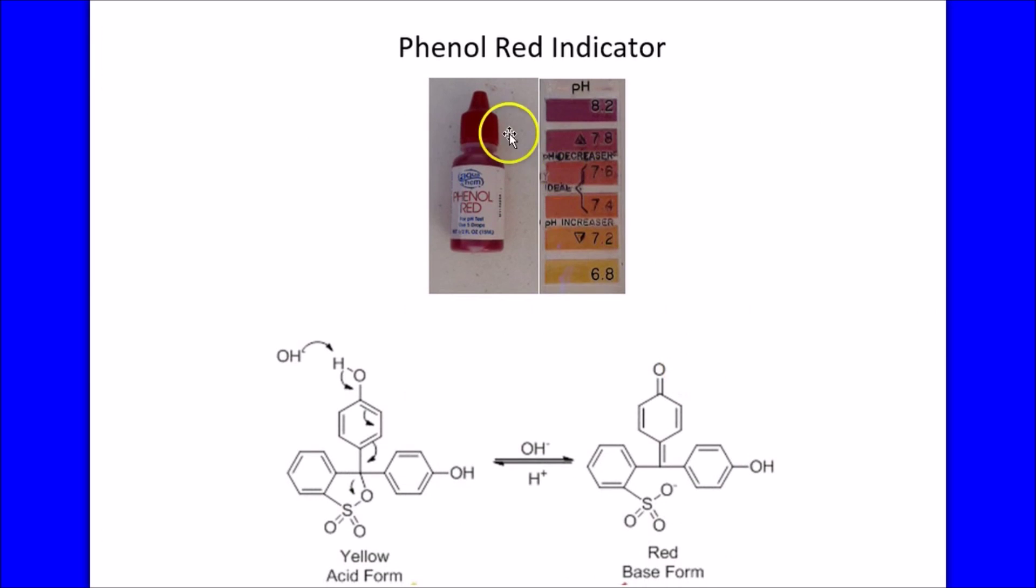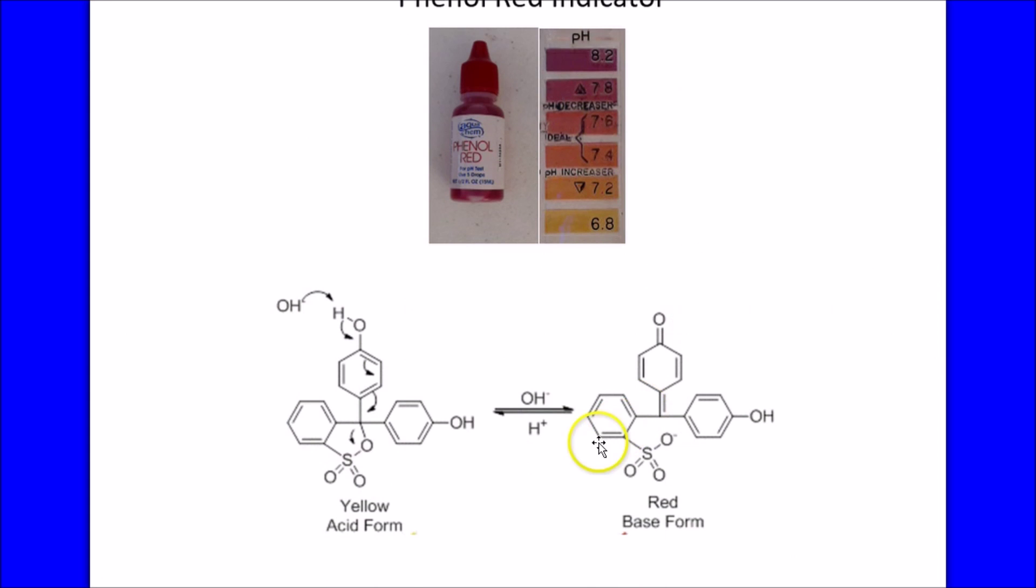We used phenol red. This is phenol red in the pH range there. So the phenol red has two forms, the acid form, which is yellow, and the conjugate base form that's red. That gives you a little better understanding of the first part of the video.